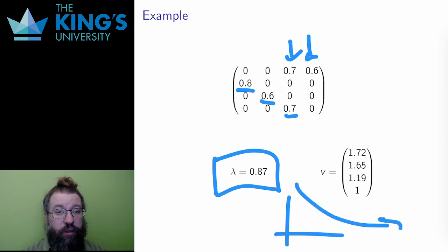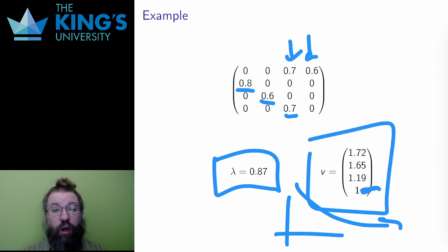The eigenvector gives the age ratios. For every member of the population in the last category, there are 1.19 in category 3, 1.65 in category 2, and 1.72 in category 1. Given that only a percentage survived to the next category, it makes sense that these ratios are all larger than 1.